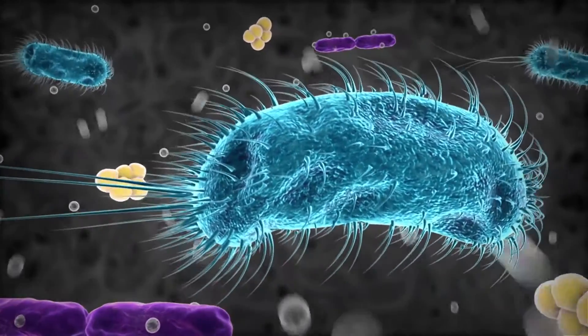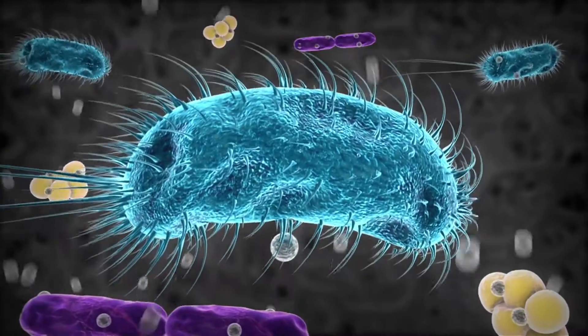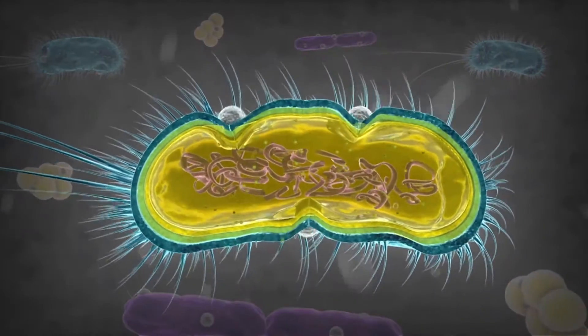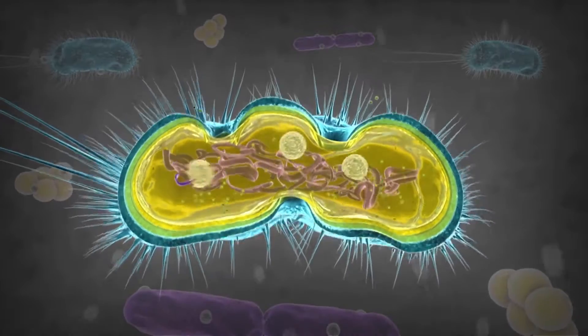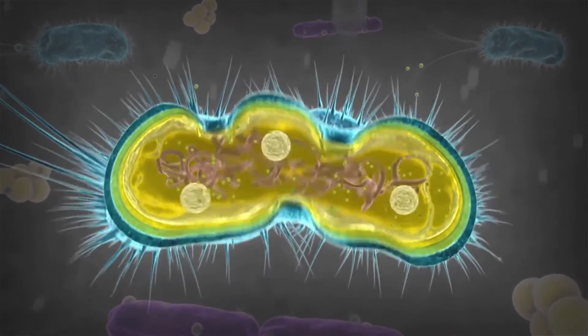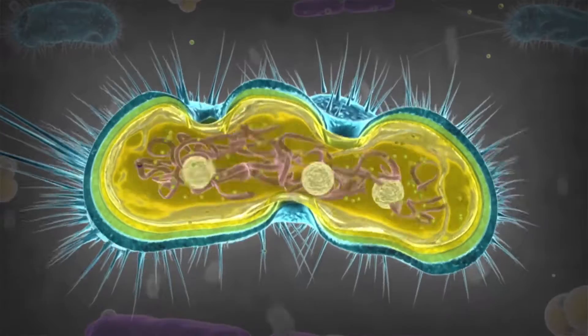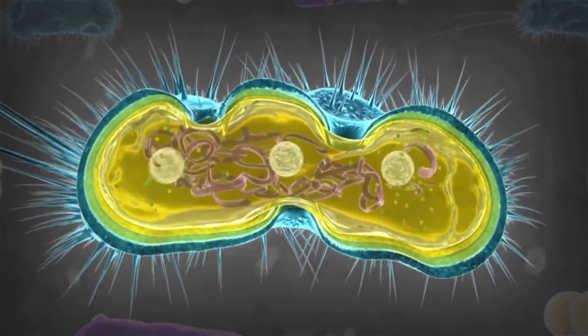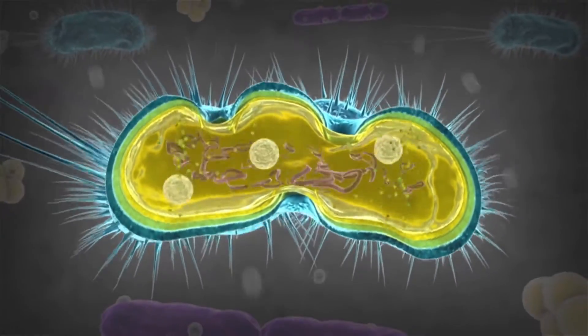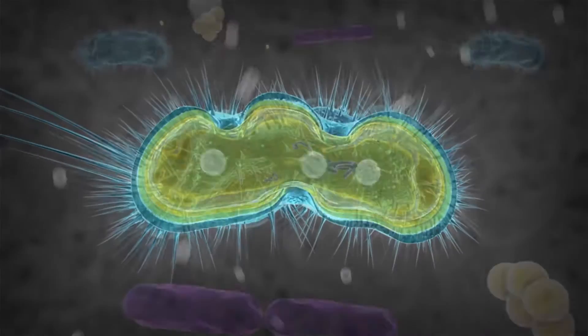The silver ions first attach to the cell wall and then cross the cell membrane to enter the bacteria, where they attack the DNA and disrupt the respiratory function, cell division, and replication process.